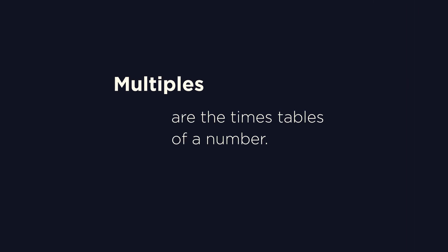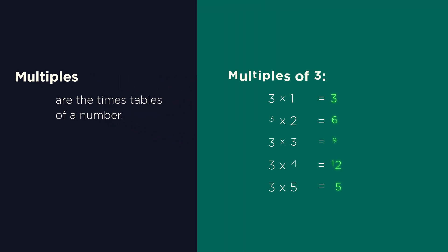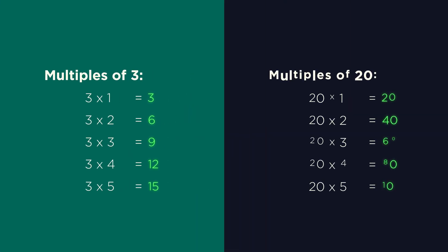So multiples are the times tables of a number. What we get by multiplying that number. So these are the multiples of 3, and these are the multiples of 20.